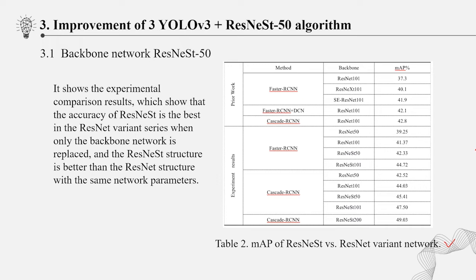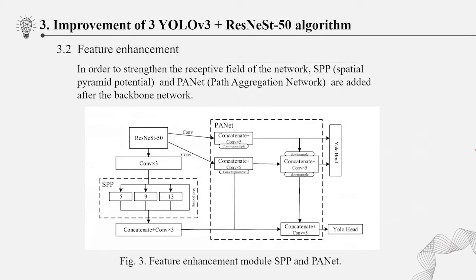compared with the original network, the scheme can improve the detection accuracy by about 3 percentage points. Feature enhancement. In order to strengthen the receptive field of the network, SPP and PA-NET are added after the backbone network. Figure 3 is the structure diagram of ResNest-50, adding SPP and PA-NET. In this paper, the adaptive feature pool is used to connect the feature grid and all feature layers, so that the useful information in each feature layer can be directly propagated to the following sub-network. The network can extract feature information more quickly and improve the processing speed of the network.